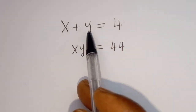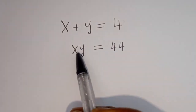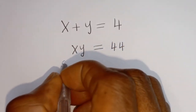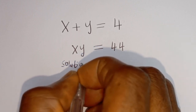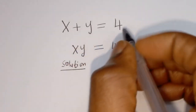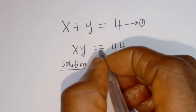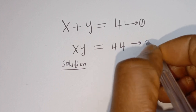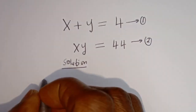Hello. How to solve for x and y in these equations: x plus y is equal to 4 — let's call this equation 1 — and x y is equal to 44 — let's call this equation 2.